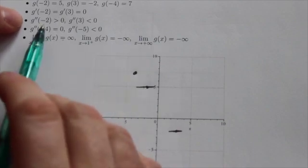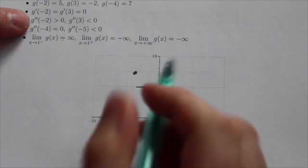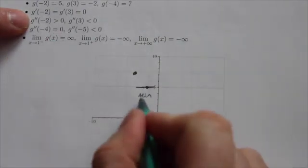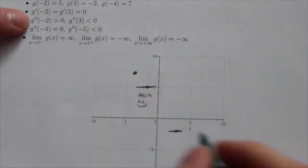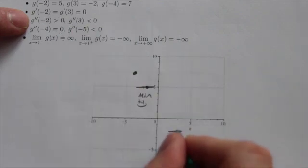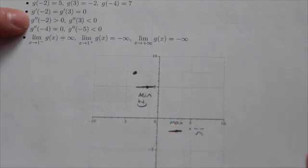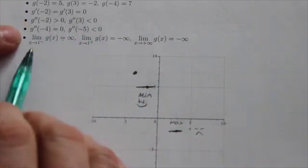The second derivative at negative 2 is greater than 0. So this means this has got to be a min, because it's got to be doing the smiley face there. And it's less than 0 at 3, which means this has got to be a maximum. We've got to be doing the little frowny face right there. So that's what that information has given us.